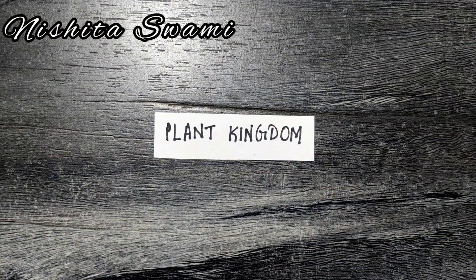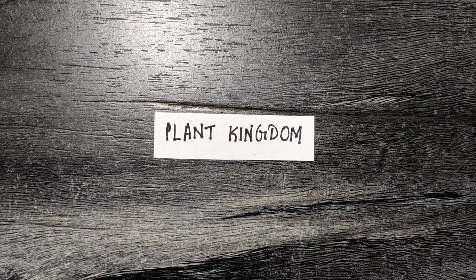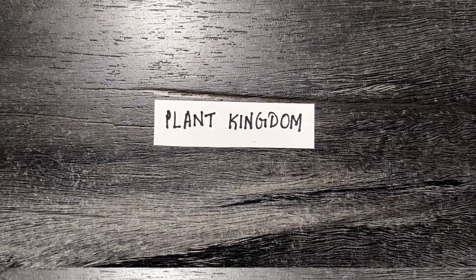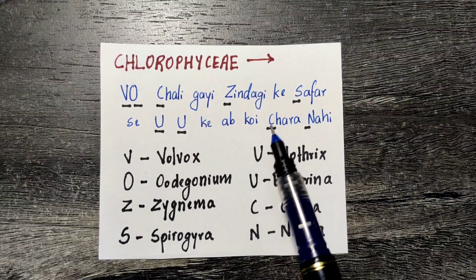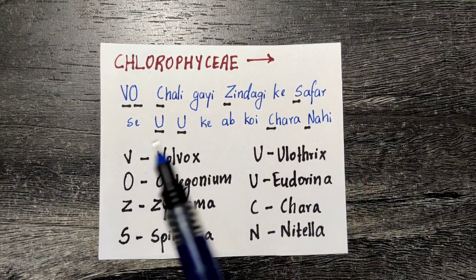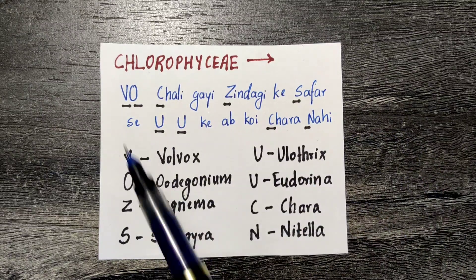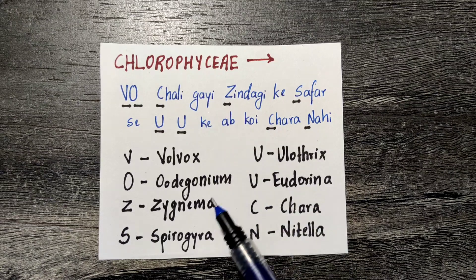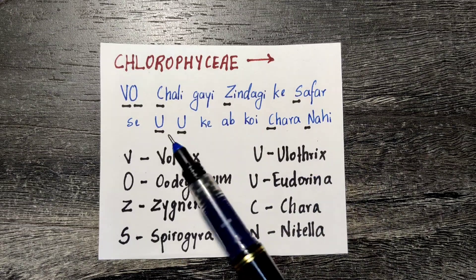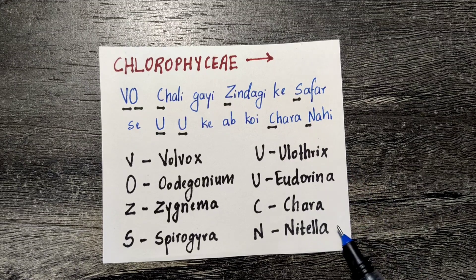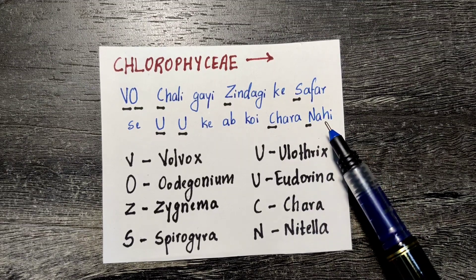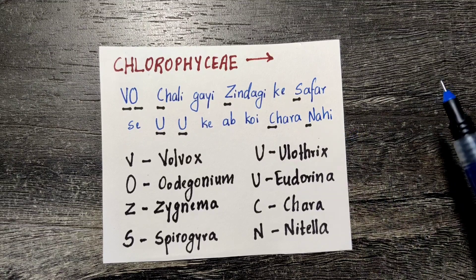In plant kingdom, animal kingdom is not a big chapter but there are many examples, so today we are going to cover all the examples of divisions. First we have Chlorophyceae, which basically means green algae. The trick for Chlorophyceae is the sentence 'gone from the world's life': V stands for Volvox, O for Oedogonium, Z for Zygnema, S for Spirogyra, U for Ulothrix, U for Eudorina, Kara for Chara, and N for Nitella. A lot of examples are covered in just one sentence.